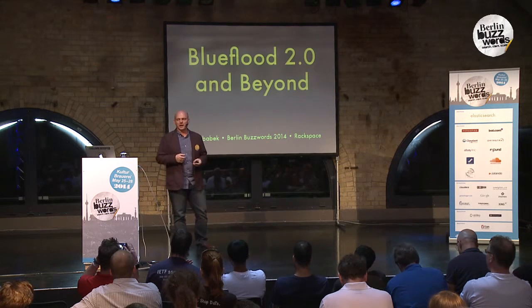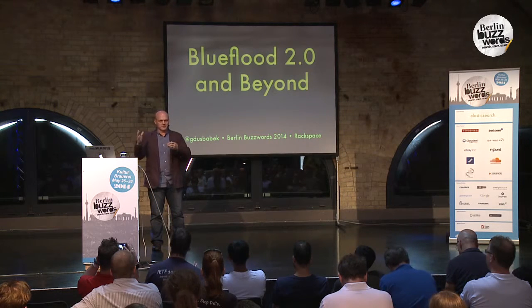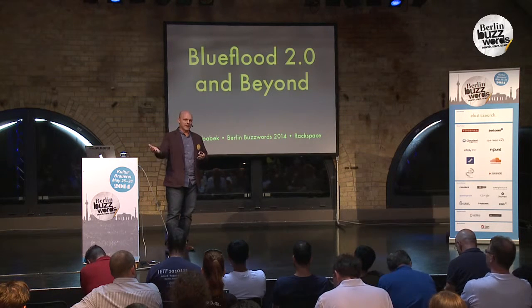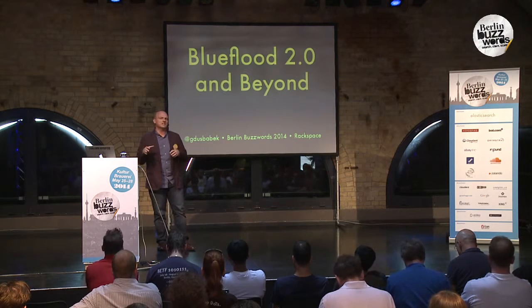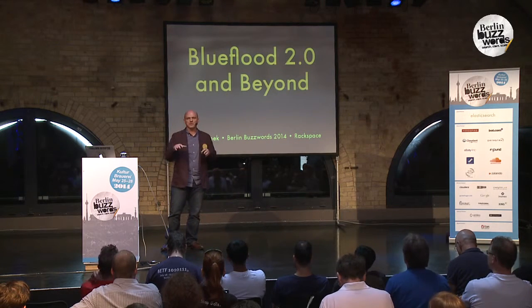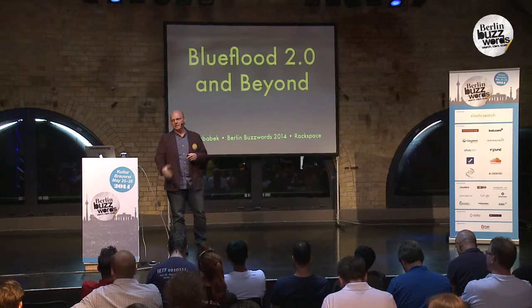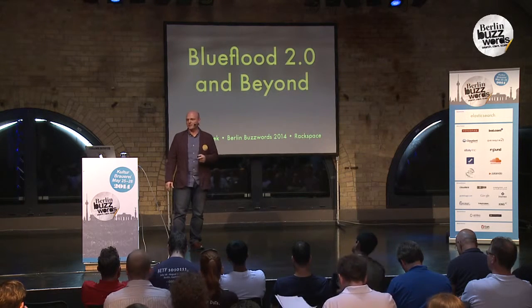Before that I worked on the cloud monitoring team, and our team spun out of that. Our primary job is to manage the metrics that come out of that system. We're currently ingesting data from thousands of nodes, most of them inside Rackspace, but we're starting to get more data from outside. Blue Flood is a distributed system that we created to manage that time series data. Blue Flood will ingest it, roll it up so the data is easier to manage, and then make it available for query.